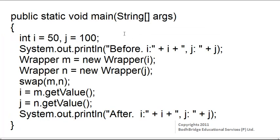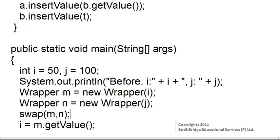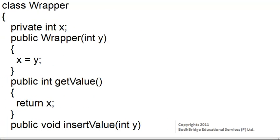Let us look into the logic of the program. The variable i is initialized to 50 and j to 100. These two variables are wrapped using our wrapper class: wrapper m is equal to new wrapper of i. An object is created for the wrapper class with i passed as the argument. In the wrapper class constructor, x equals y, so the value of i, which is 50, is assigned to x. So x will be equal to 50.